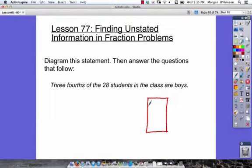So we've got our diagram box, we want four equal spaces, and remember we're just sketching, so this is okay if they're not exactly perfect, and we know 3 fourths of the 28 students in the class are boys.